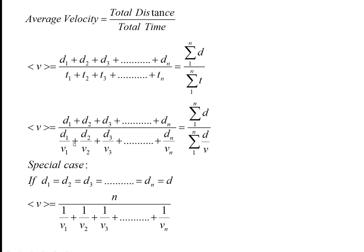If distance and velocity are given instead of distance and time, substitute time = distance/speed. The formula becomes: sum of all distances divided by the sum of (each distance divided by its velocity).